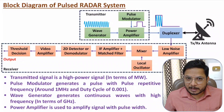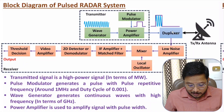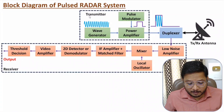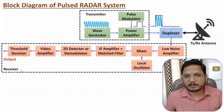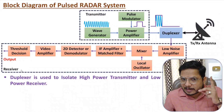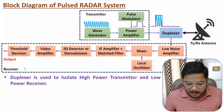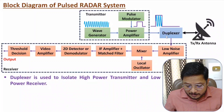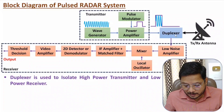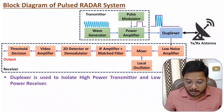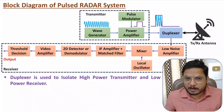Now I will explain the duplexer part. The duplexer is used to separate the high-power transmitter and the low-power receiver. In a pulsed radar system we use a single antenna. The duplexer transmits signals using the transmitter, and after transmission whatever echo signal comes in is forwarded to the receiver via the duplexer. It is very important to remember that the transmitter functions at very high power while the receiver operates on very weak signals.